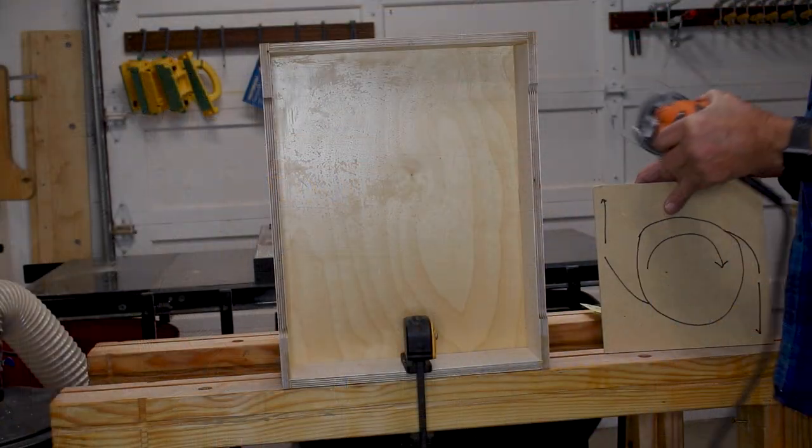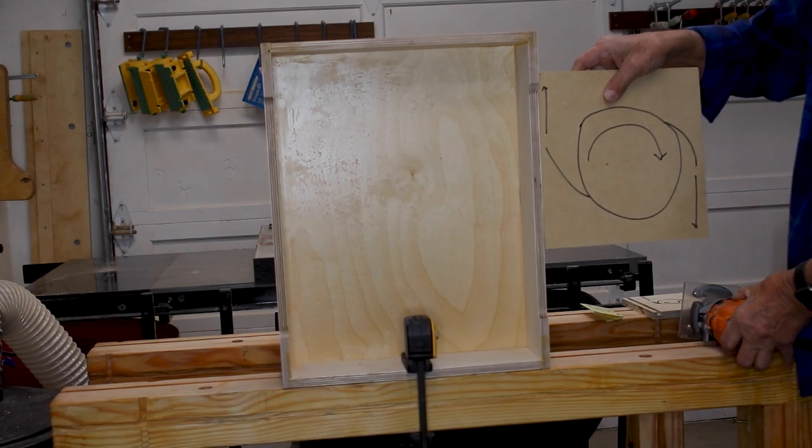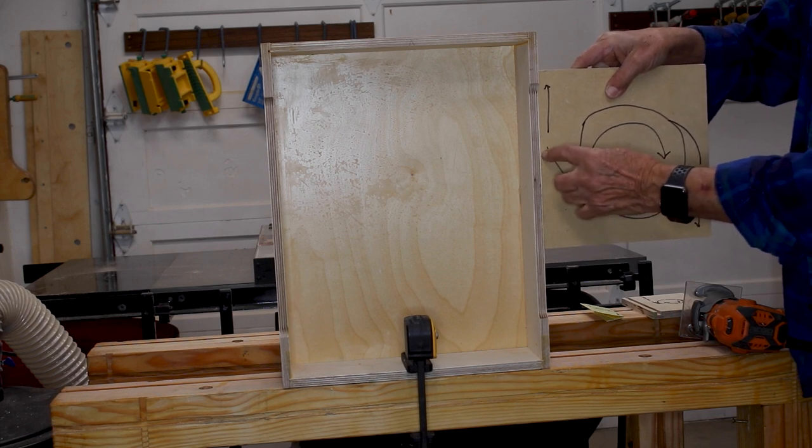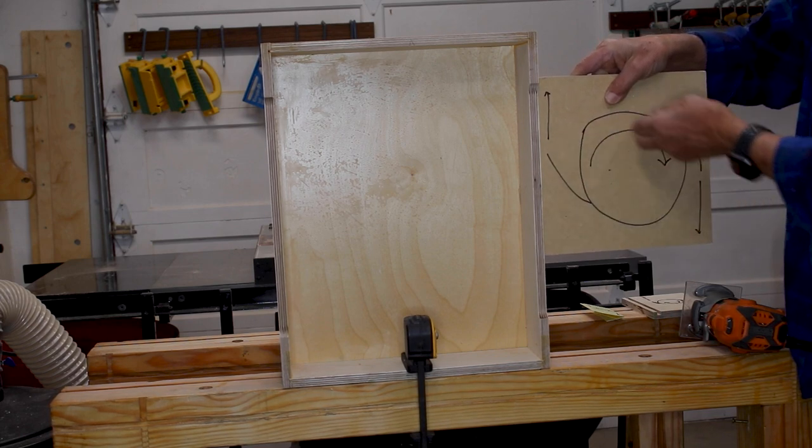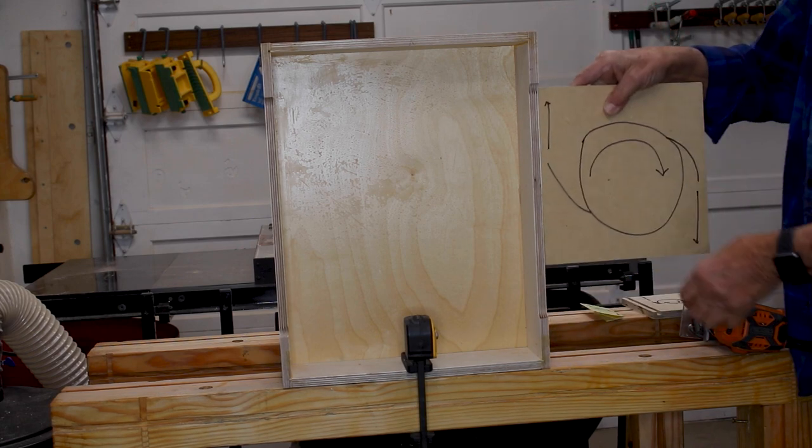So let's do a few more. Maybe I want to route the outside of this, so I'm going to put my router here. The bit is going to engage here and so the bit's turning this way and I want to go up in that case.